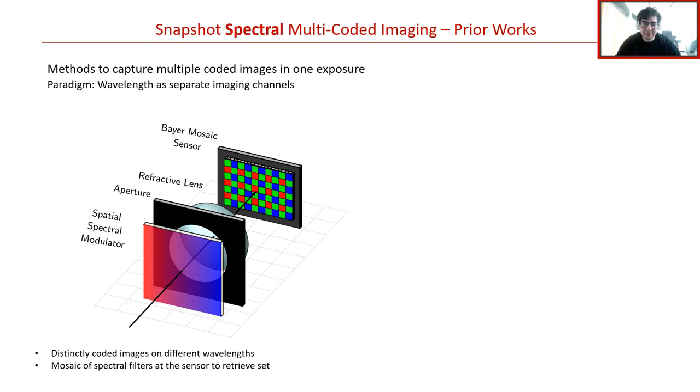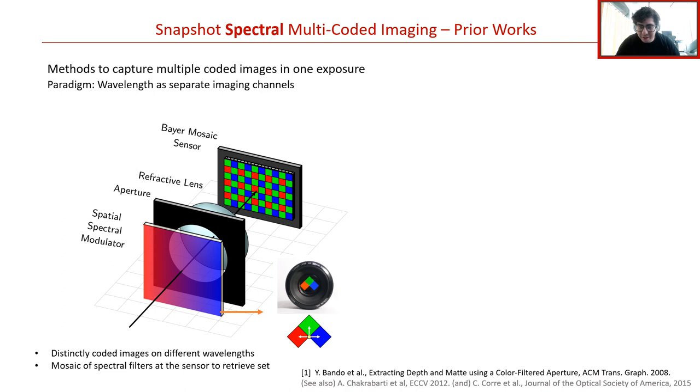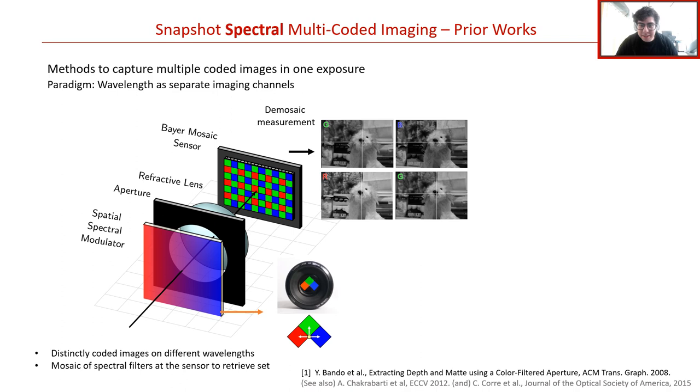The general design of these cameras can be summarized in the following schematic. Some spatially varying spectral modulator is placed at the aperture plane in front of a focusing lens. This optic is essentially a wavelength-dependent phase or transmission mask and serves the purpose of producing distinctly coded images on different wavelengths of light. A mosaic of complementary spectral filters tiled above the sensor pixels are then used to simultaneously measure and demultiplex the signal. Using this optic, the authors referenced below capture a measurement that is then demosaicked to obtain three distinctly coded images on the RGB channels. These images are then passed to a processing algorithm to attain a segmentation mask and depth map efficiently.